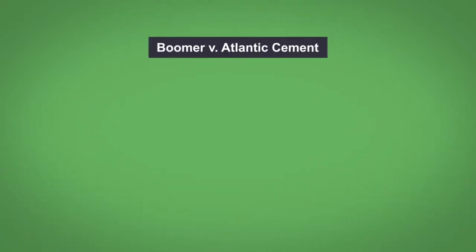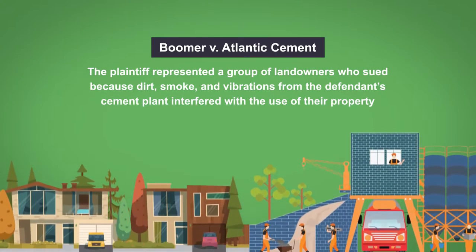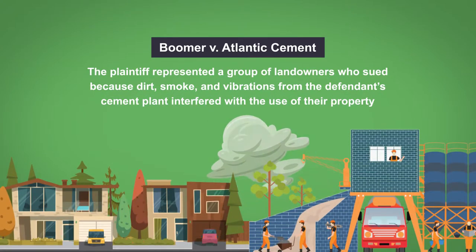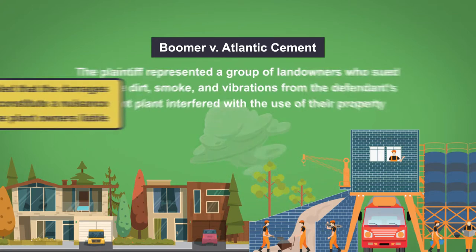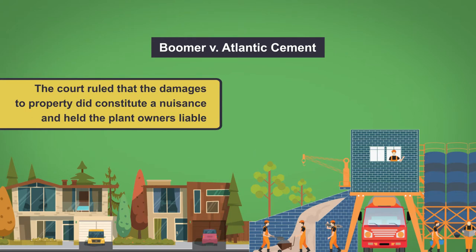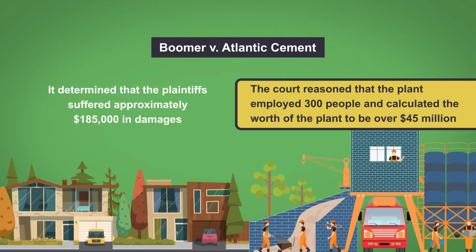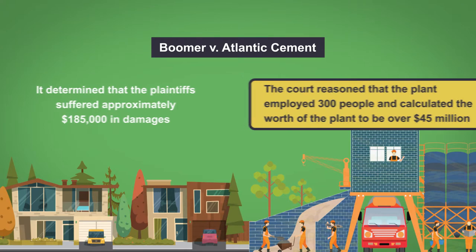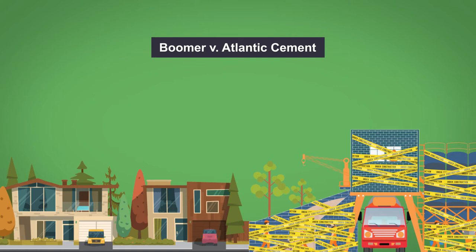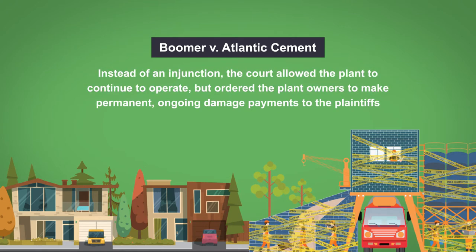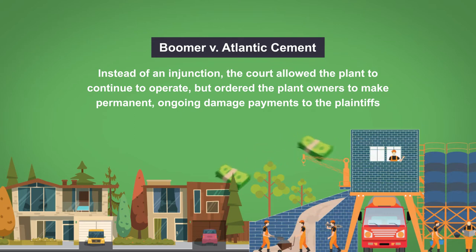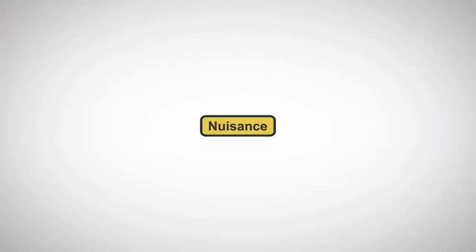Consider the case of Boomer v. Atlantic Cement. The plaintiff represented a group of landowners who sued because dirt, smoke, and vibrations from the defendant's cement plant interfered with the use of their property. The court ruled that the damages to property did constitute a nuisance and held the plant owners liable. However, the court reasoned that the plant employed 300 people and calculated the worth of the plant to be over $45 million. By contrast, it determined that the plaintiffs suffered approximately $185,000 in damages, so forcing the plant to cease activity would be economically disastrous. Therefore, instead of issuing an injunction, the court allowed the plant to continue to operate but ordered that the plant owners make payments for their ongoing damages to the plaintiffs.